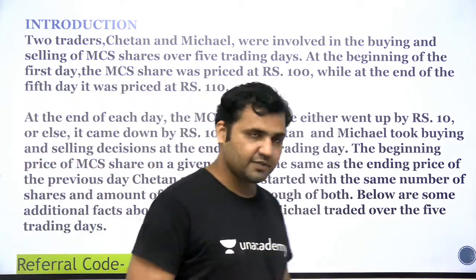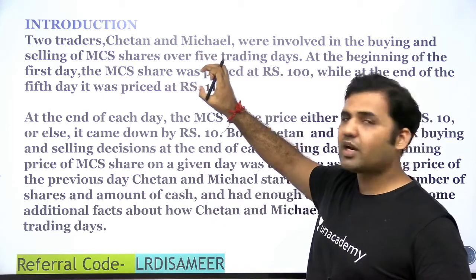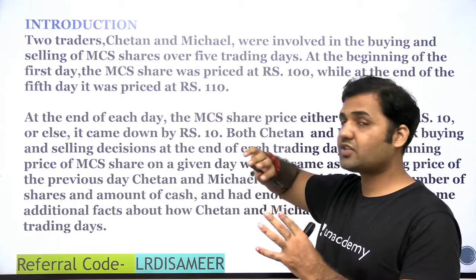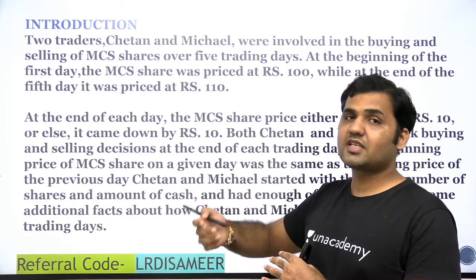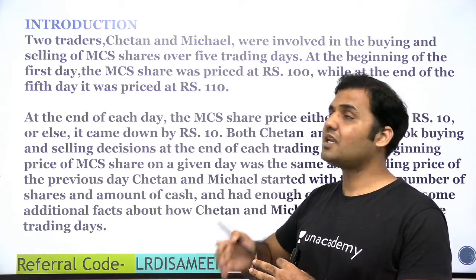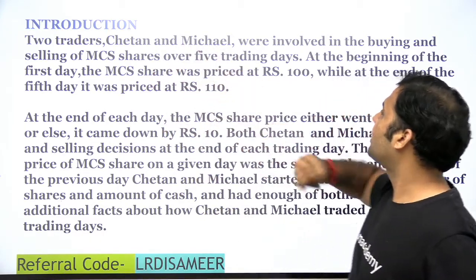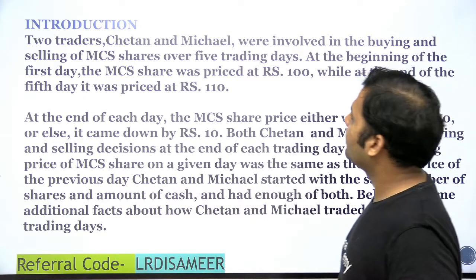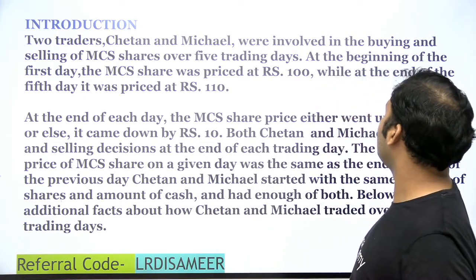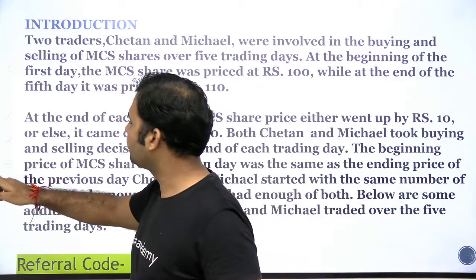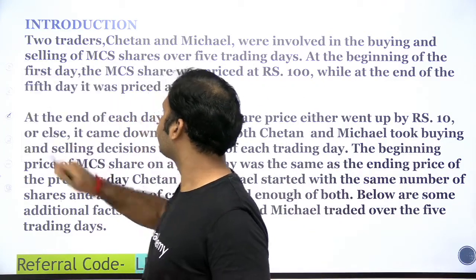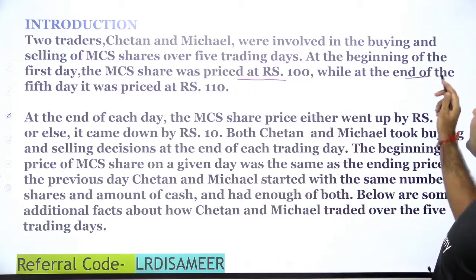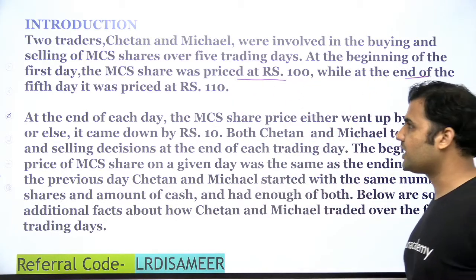Introduction: let's first understand some important points. These points will help you solve the set without making any case. Two traders, Chetan and Michael, were involved in the buying and selling of MCS shares over five trading days. At the beginning of the first day, the MCS share was priced at rupees 100, while at the end of the fifth day it was priced at rupees 110.